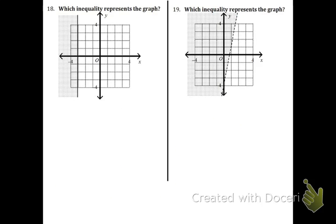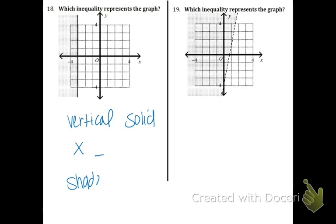Now 18 and 19 are very similar except you're coming at it from the other side — you're given the graph and you have to write the inequality. This is a vertical line, so that means it's going to be starting with x. It is a solid line, so that means we're going to have a line underneath. And lastly, it's shaded left, which means smaller numbers — that symbol is less than or equal to. And the number it's going through is negative 3.